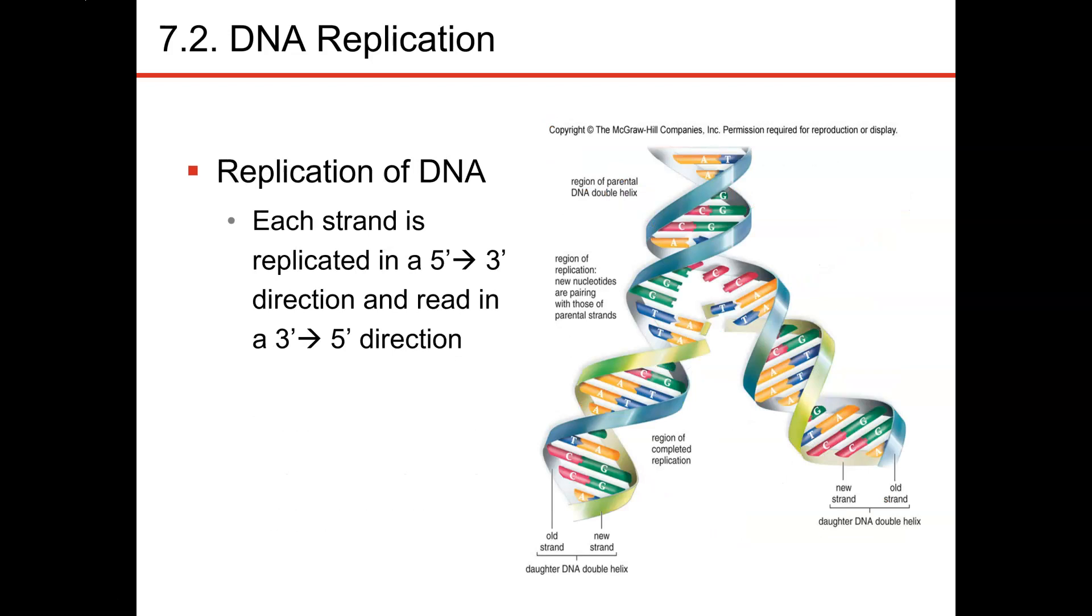We always produce DNA in a 5-to-3 direction. The parent strand, we add only to that 3-prime end, and then we produce in a 5-to-3 direction. Our DNA strands, the parent and the daughter strand, will always run anti-parallel to each other.